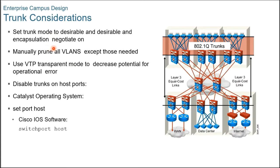Trunk considerations: trunks are typically deployed on the interconnection between the building access and the building distribution layers. There are several best practices regarding trunking. For trunk mode and encapsulation, as a best practice when configuring trunks, set the Dynamic Trunking Protocol or DTP to desirable on both sides to enable negotiation between switches. Another best practice is to manually prune unused VLANs from trunk interfaces to avoid broadcast propagation.